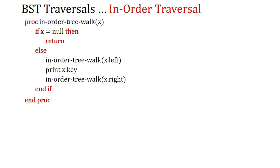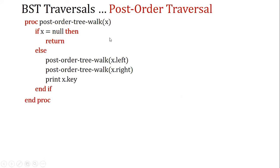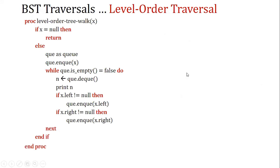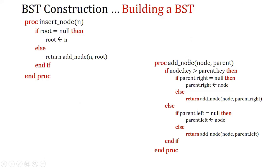For pre-order traversal: if x equals null, return; otherwise print x, then recursively traverse left, then right. For in-order traversal, the procedure visits left subtree first, then the node, then right subtree. For post-order traversal, left and right subtrees are visited before the node. This is the level-order tree algorithm.